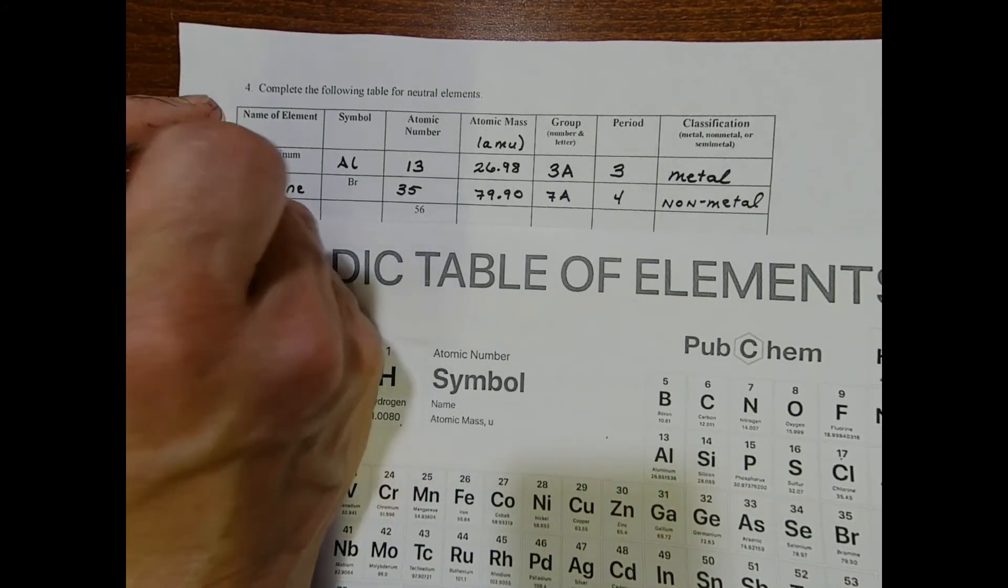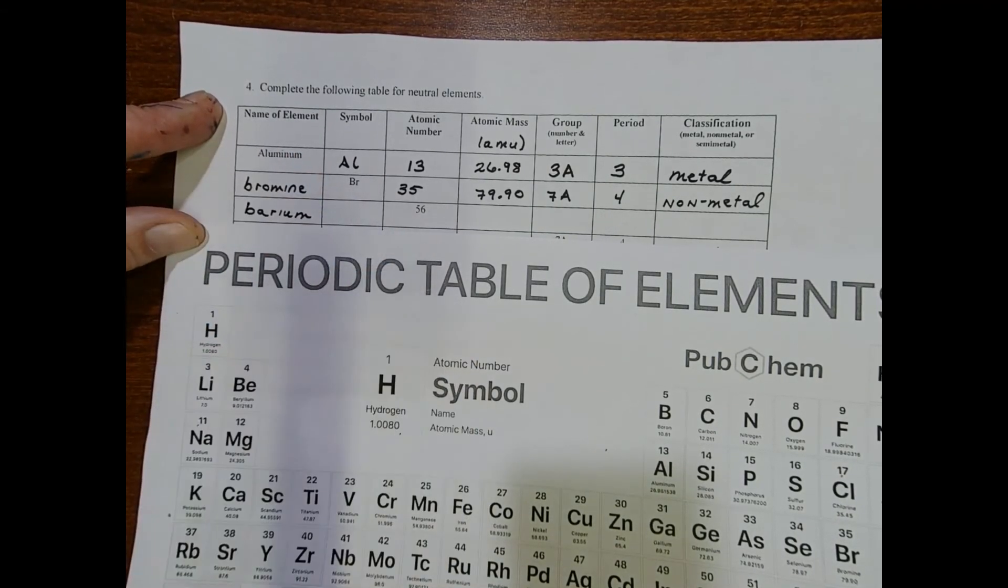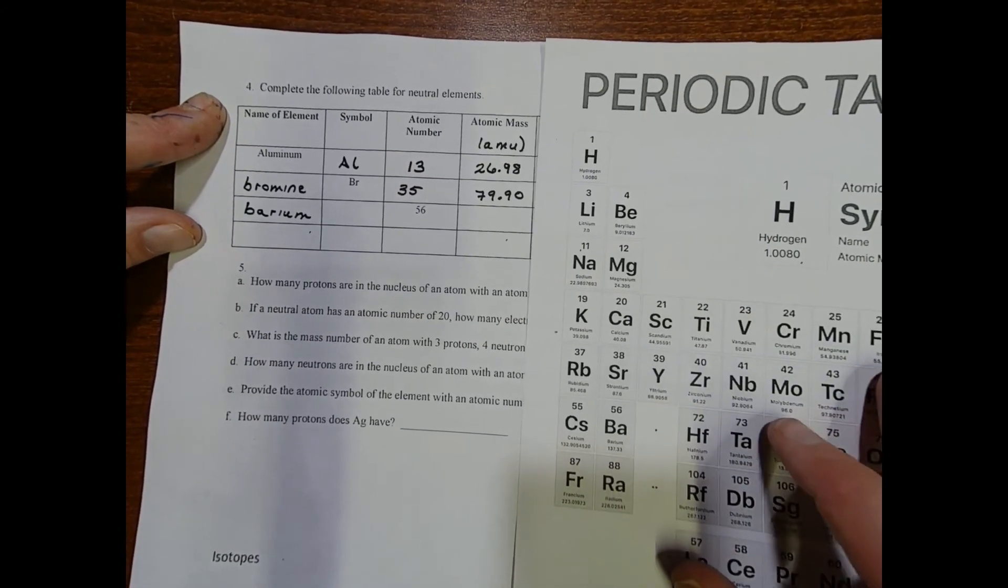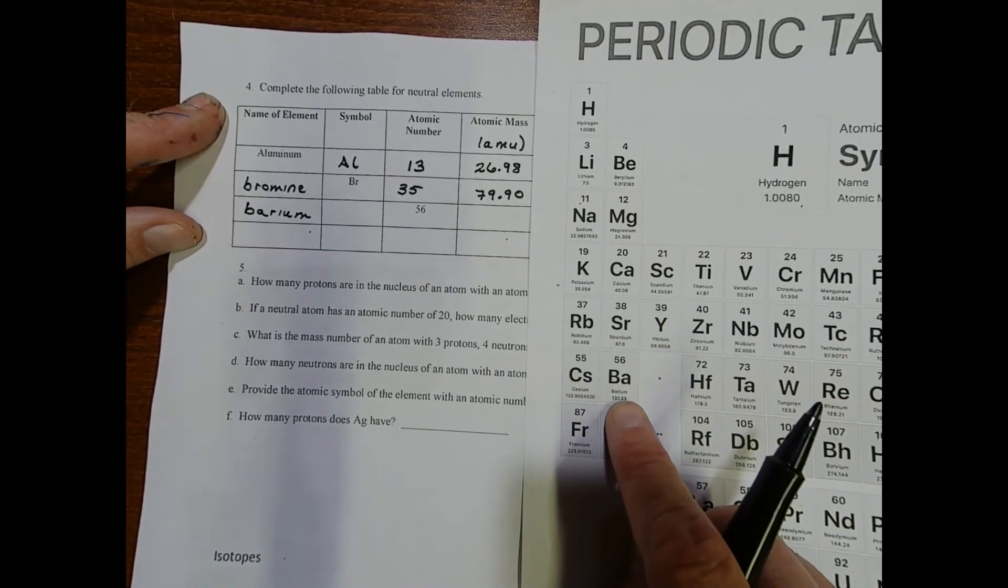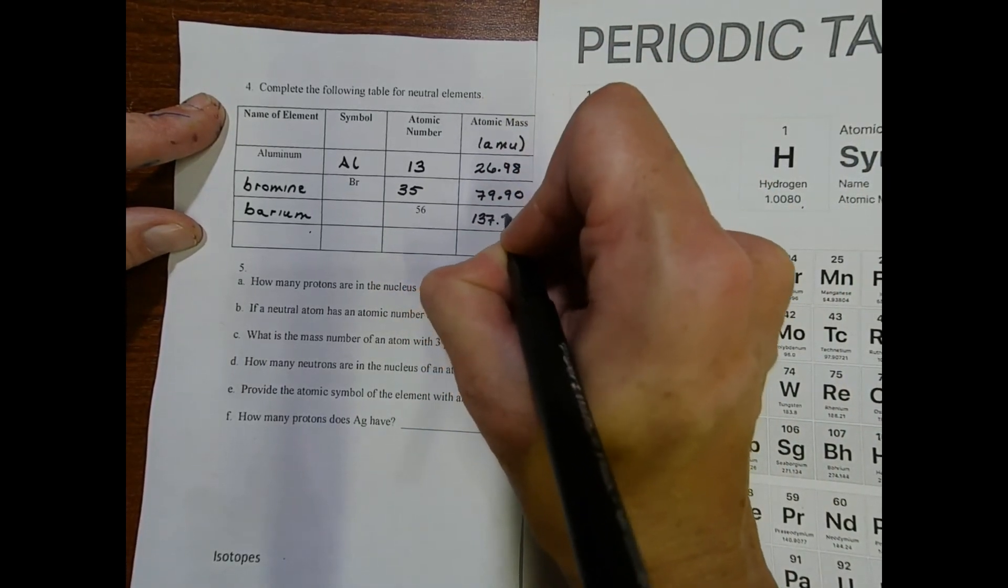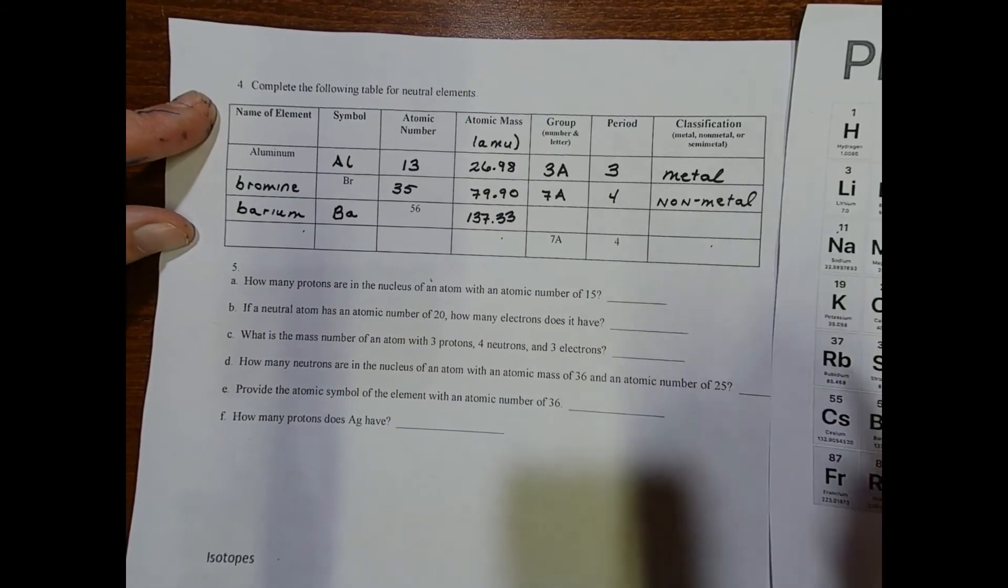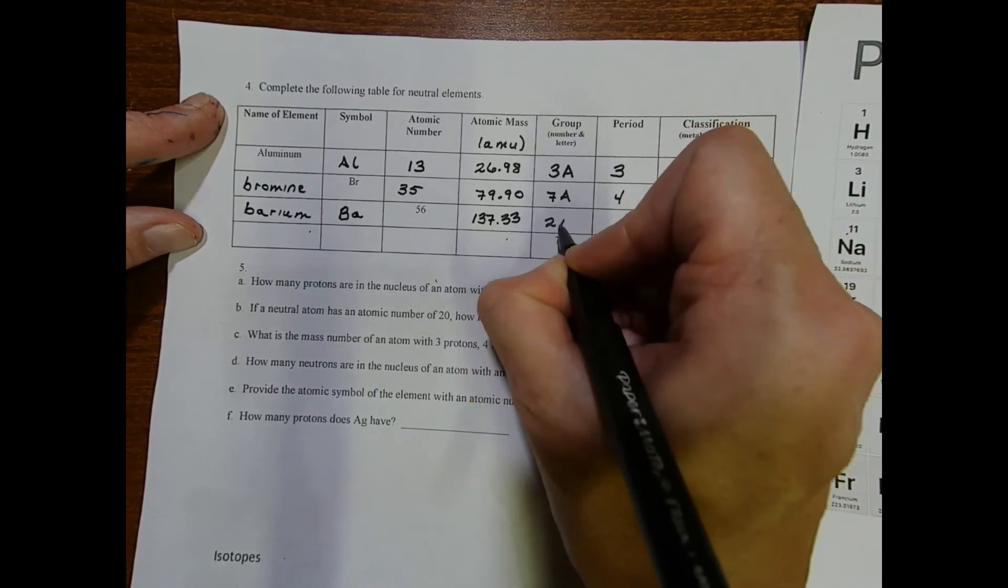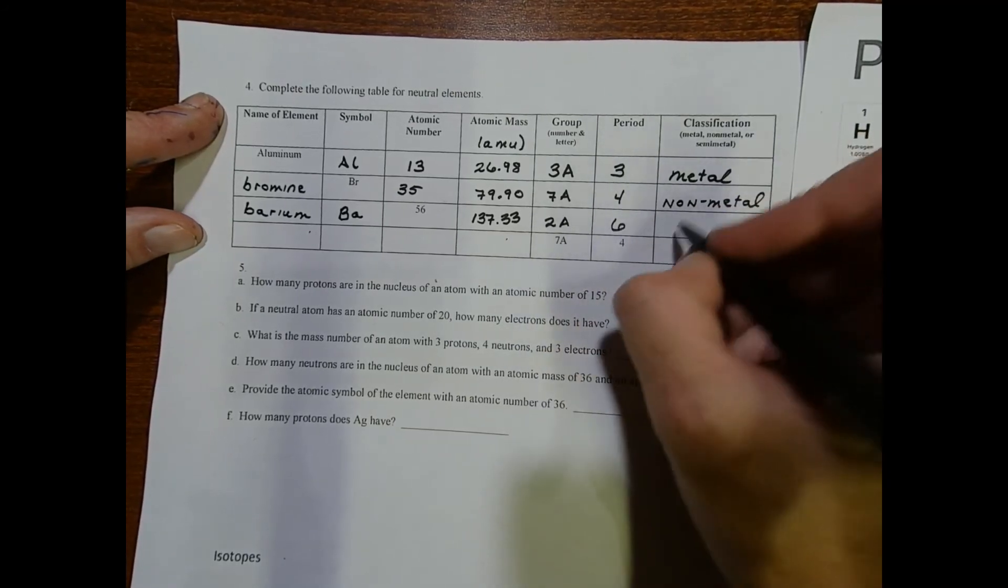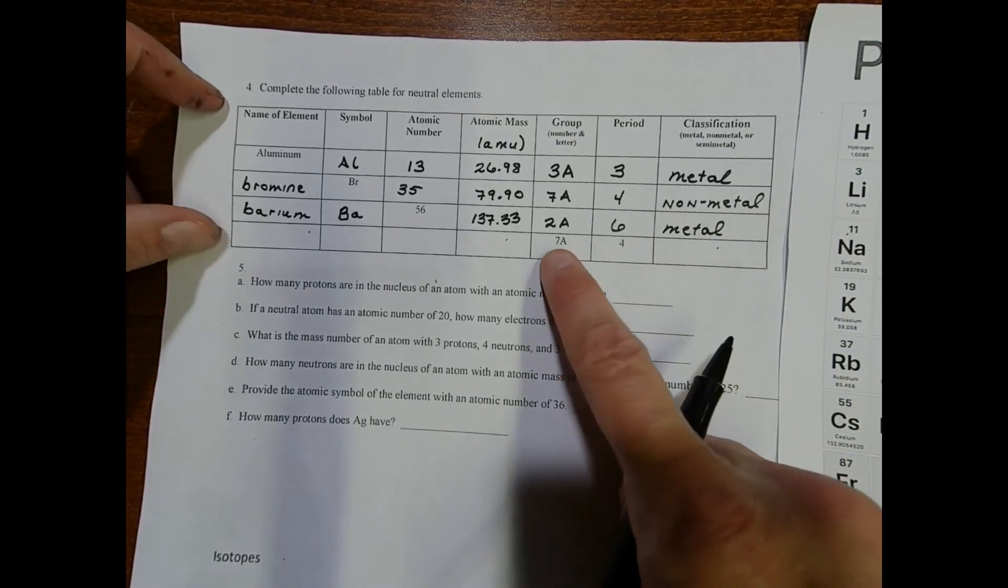On the next one, we have barium. I know it's barium because if I look at my periodic table, number 56 is barium. It has a mass of 137.33 amu, its symbol is Ba, it's in group 2A, and it's in row 6 of the periodic table, so period 6. It's a metal—everything on the left side is a metal.